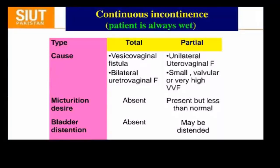In continuous incontinence the patient is always wet. The cause is a vesico-vaginal fistula. The micturition desire is usually absent and there is no period of dryness as the patient is always wet. In partial continuous incontinence, the micturition desire is present but less than normal, and the period may or may not be dry. The cause is a unilateral ureteric fistula.